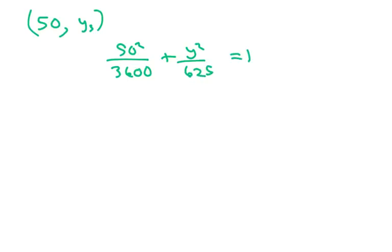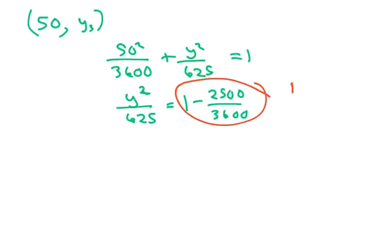So the last one is at $x = 50$, and we're going to find the third $y$. We get $\frac{50^2}{3600} + \frac{y^2}{625} = 1$. This gives $\frac{y^2}{625} = 1 - \frac{2500}{3600} = \frac{1100}{3600}$, which simplifies to $\frac{11}{36}$.